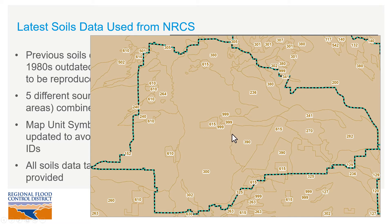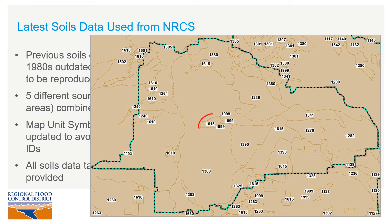Since we combined five soil data sets into a single layer, we modified the map unit symbols to avoid having any duplicates across the different survey areas. For example, here in the central watershed, this data comes from source number one, so instead of 615, we add a one in front of the map unit number and it becomes 1615. A similar process was followed to modify the map unit numbers for sources two, three, four, and five as well.